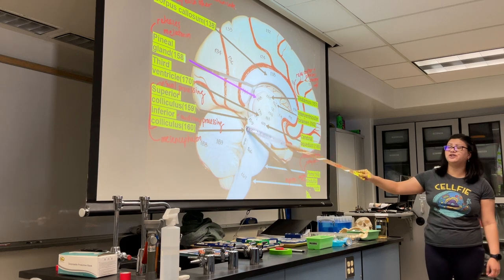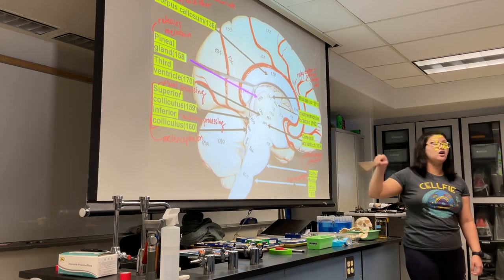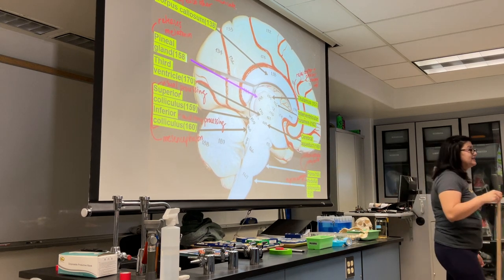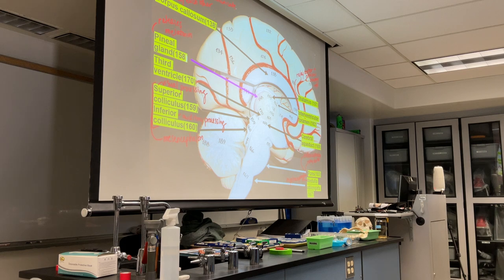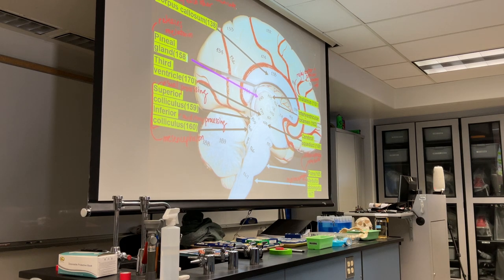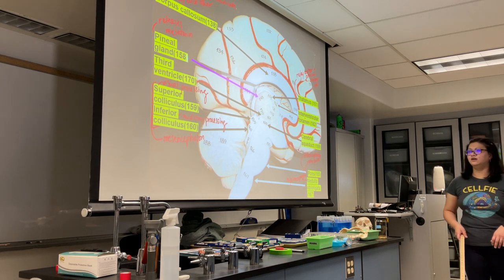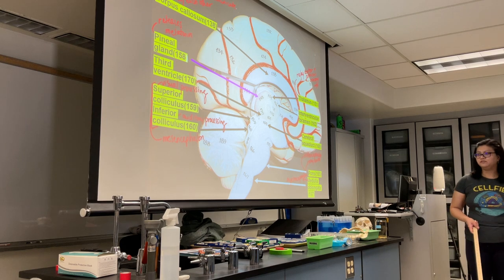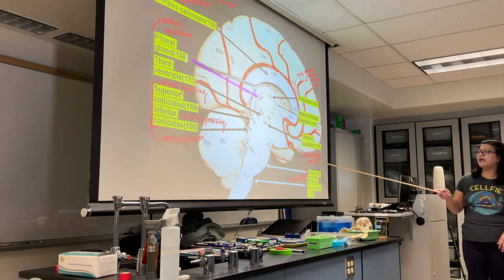These structures — the colliculi — are part of your brain called the mesencephalon, which is your midbrain.